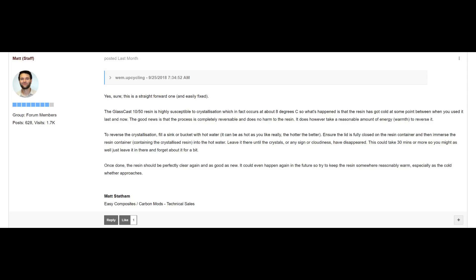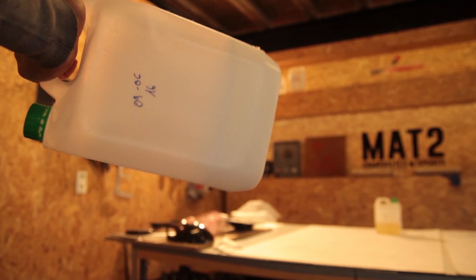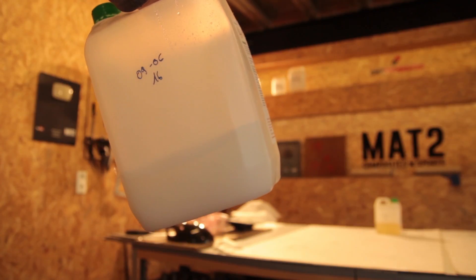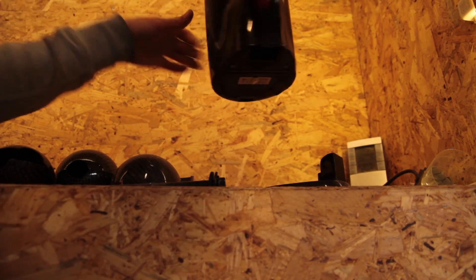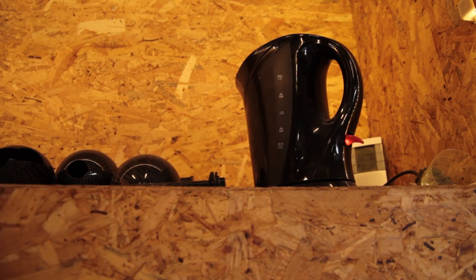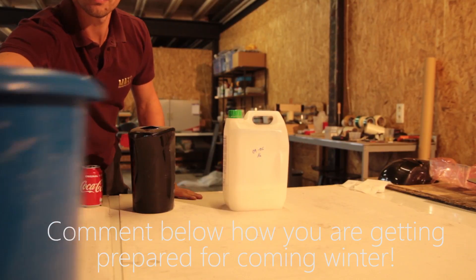As you can see the hardener is still okay, but then I read this post that Matt shared on the Tal Composites forum talking about resins crystallizing. So this might happen as well with the GC50, the Glasscast 1050 that I used in the other tutorials to make the tabletop covered with carbon fiber.